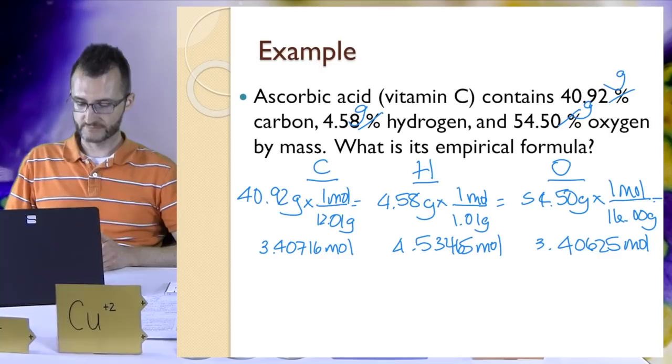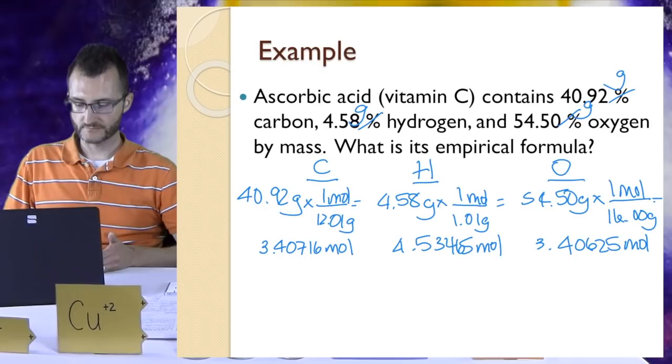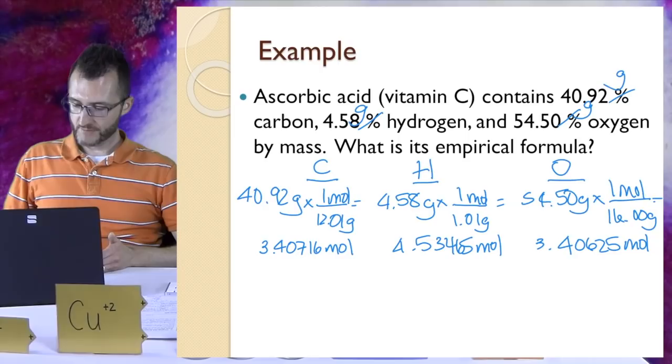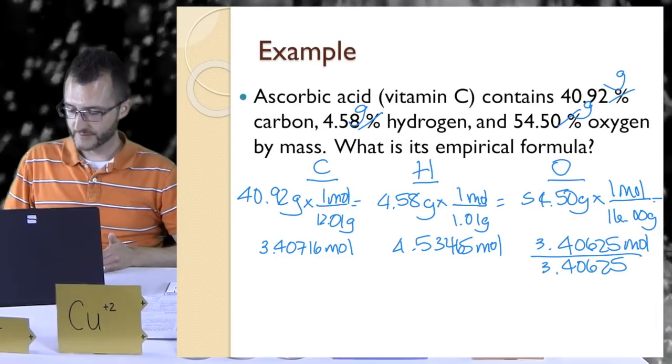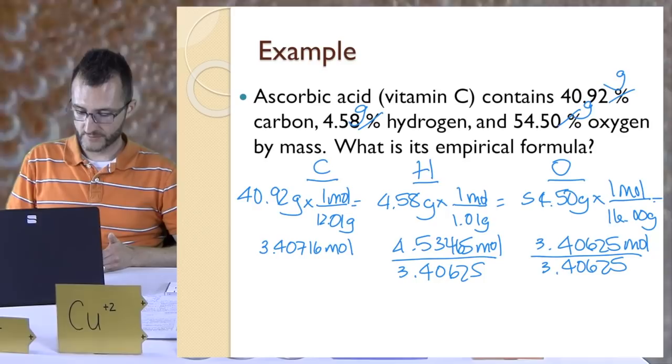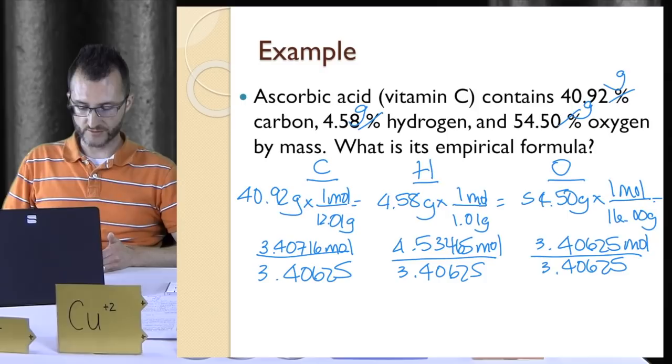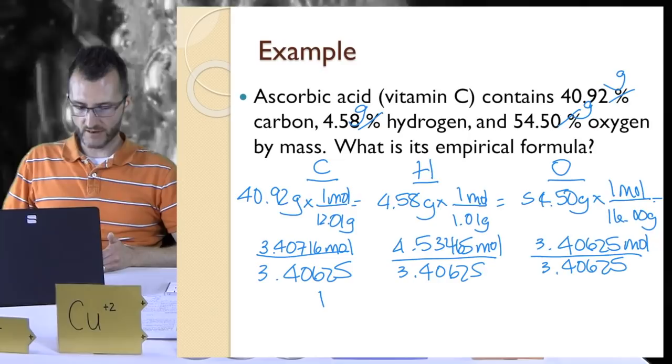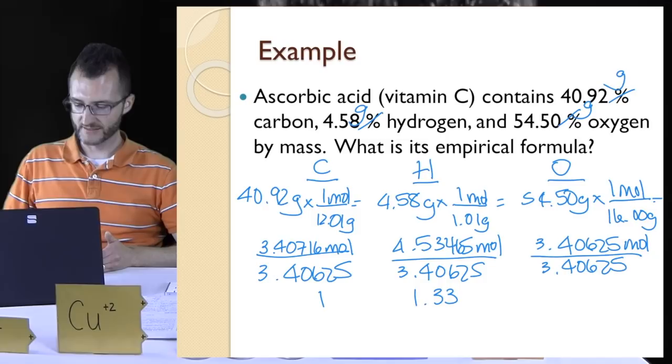We've found our mole ratio in these decimal forms. We want to make it a whole number form. So we're going to divide all these numbers by the lowest of the numbers. It looks like oxygen just by a little is the lowest. So I'm going to divide all of them by that number. When I do that, this number when divided is just 1. For hydrogen, I get 1.33. That's not close enough to round to just 1. And then the last one, of course, is 1. So my ratio is 1 to 1.33 to 1.